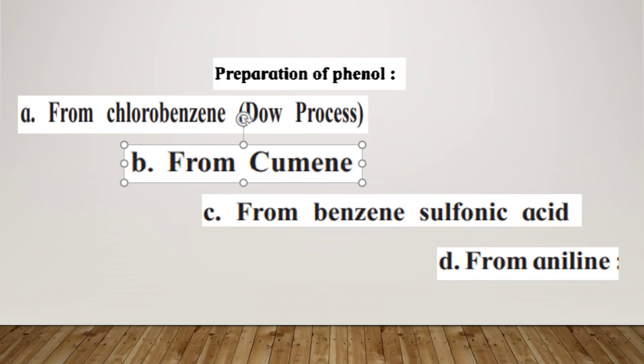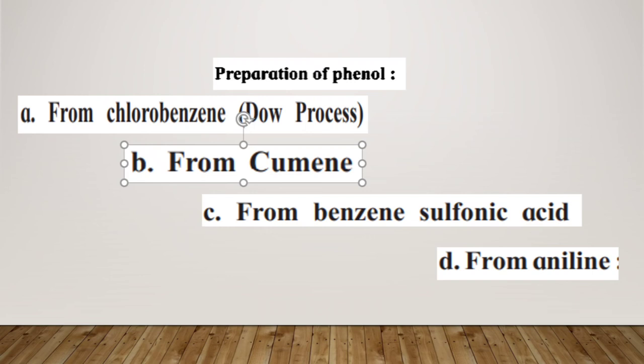Now let us move on to the preparation of phenols. In the preparation of phenols, we will see 4 methods: first, from chlorobenzene which is also called the Dow process; second, from cumene; third, from benzene sulfonic acid; and fourth, from aniline. These are the four methods of preparation of phenols.